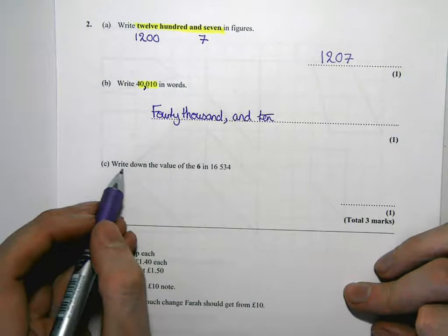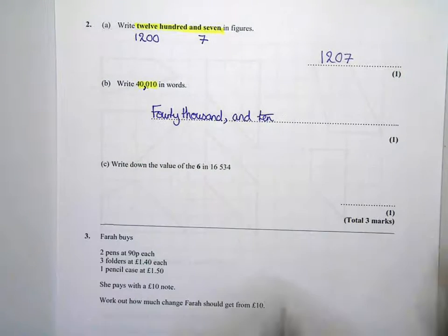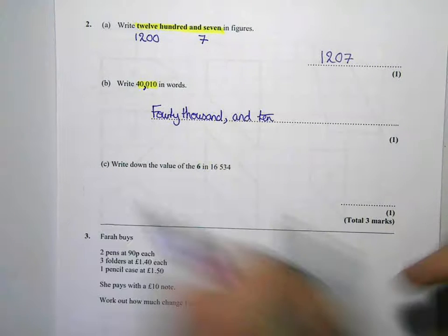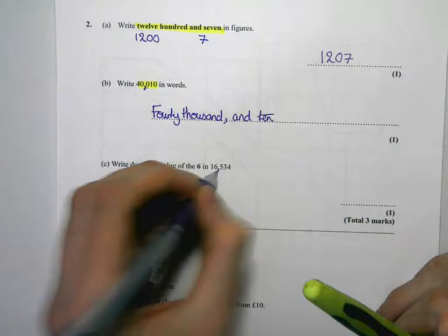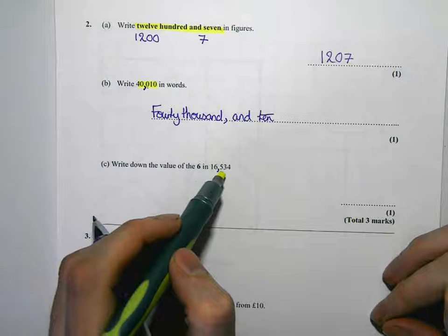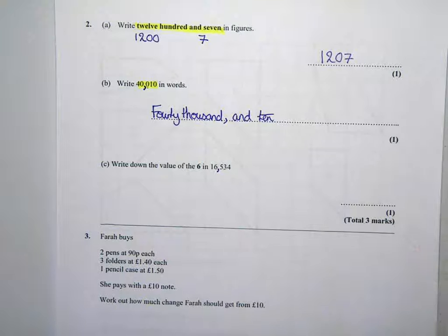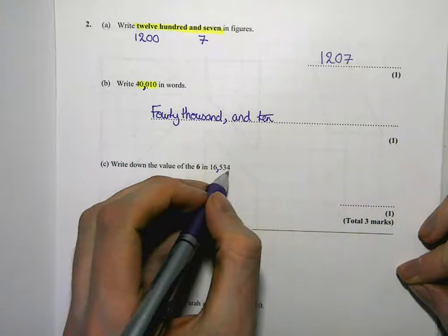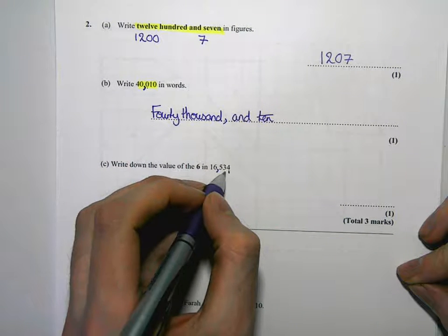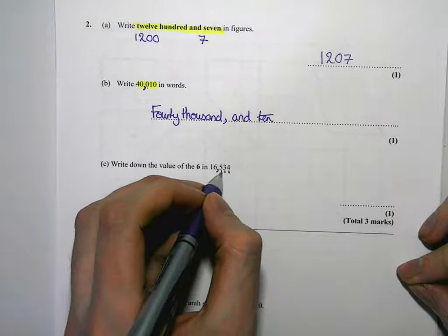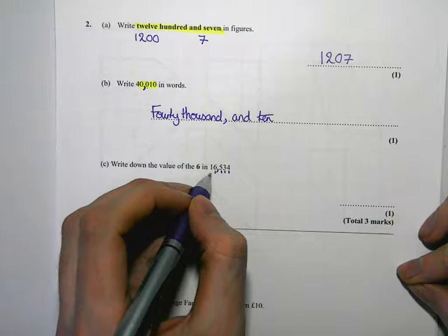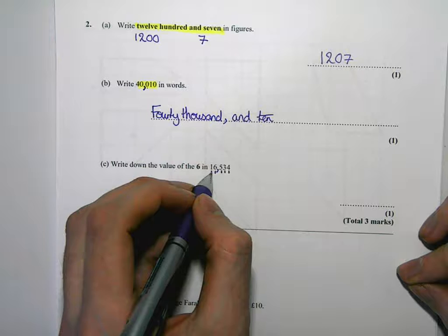And the last bit here, write down the value of the 6 in 16,334. Let's put the comma in again. So here we've got units, tens, hundreds, thousands, and tens of thousands.